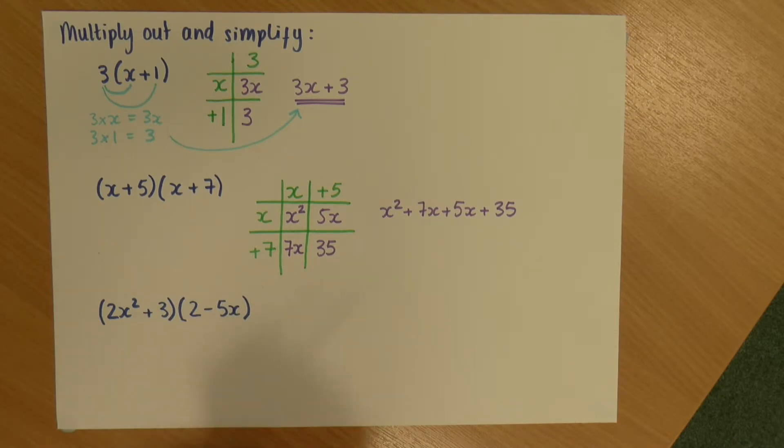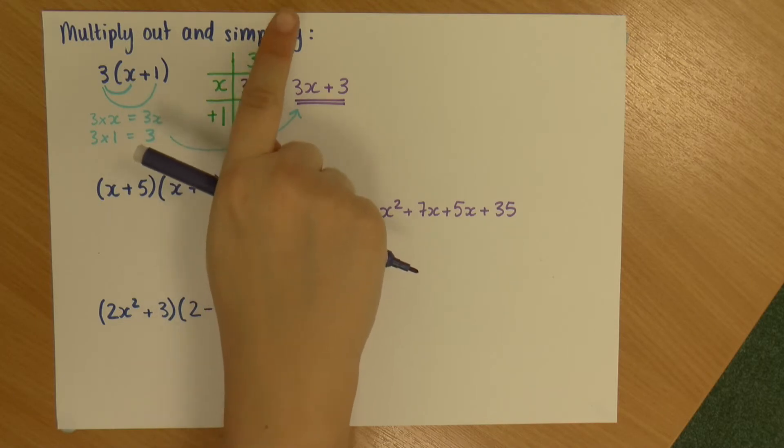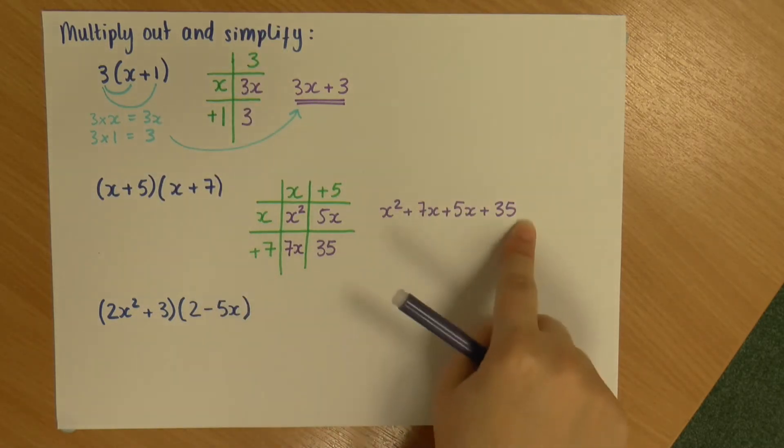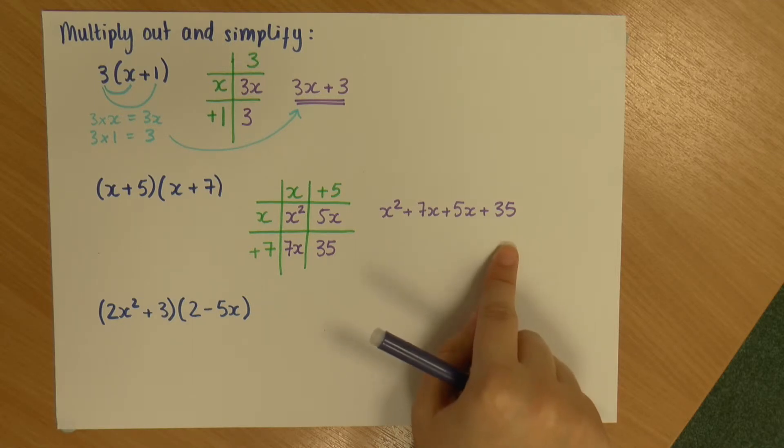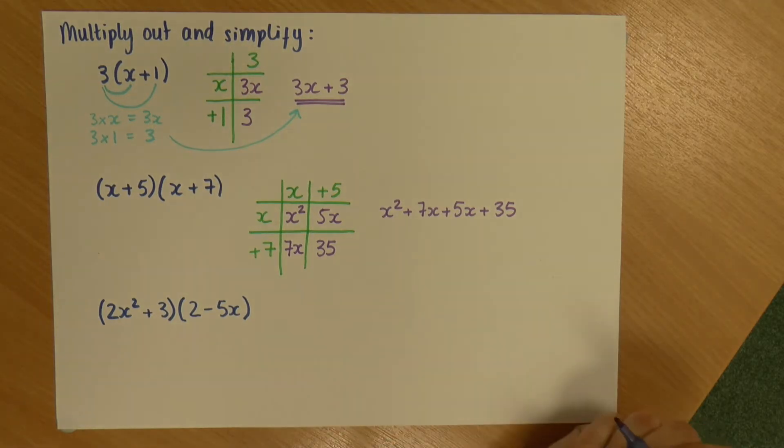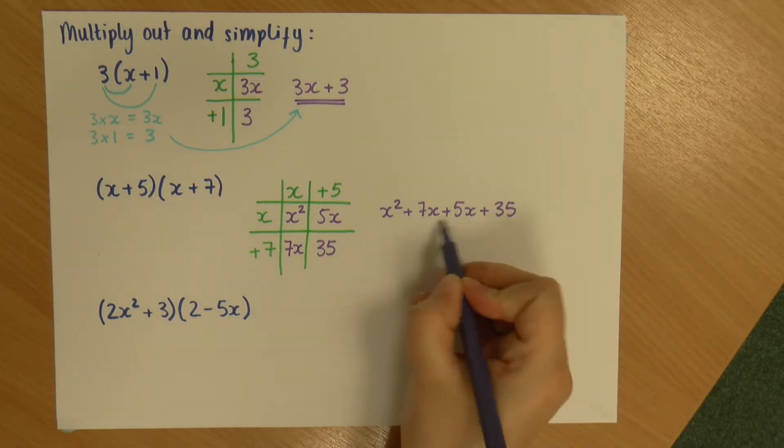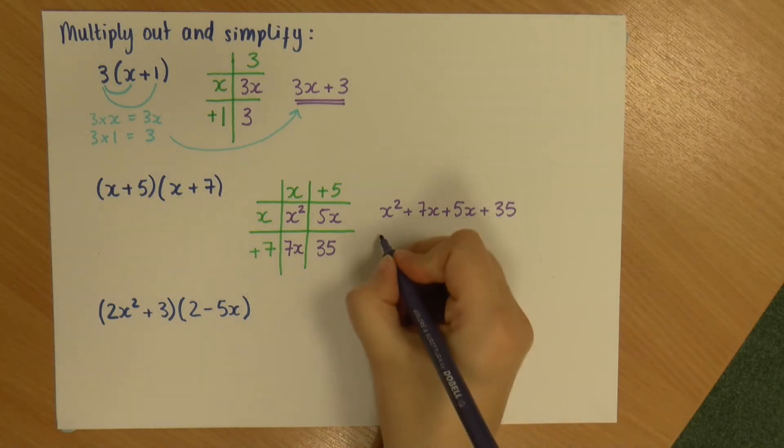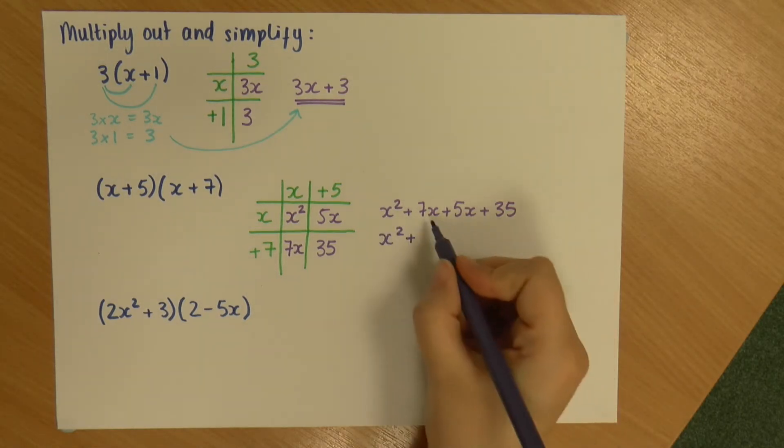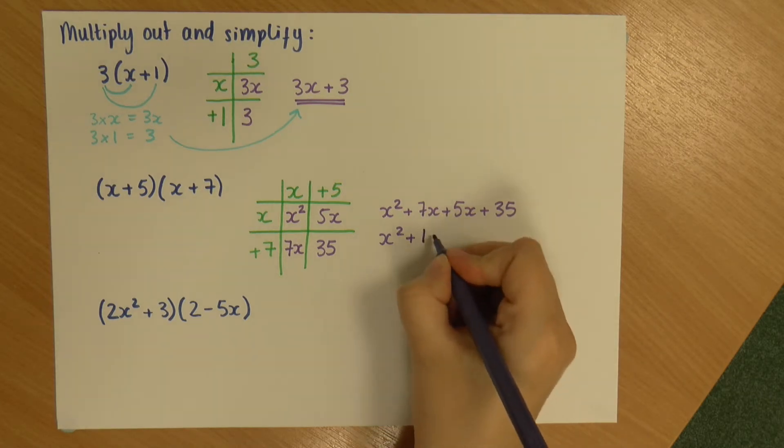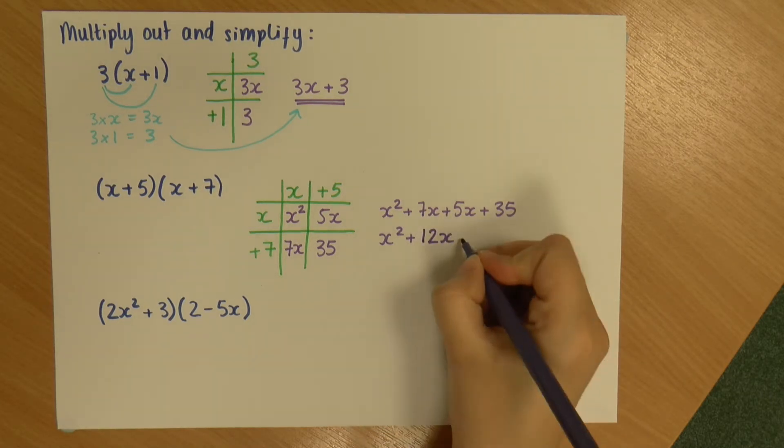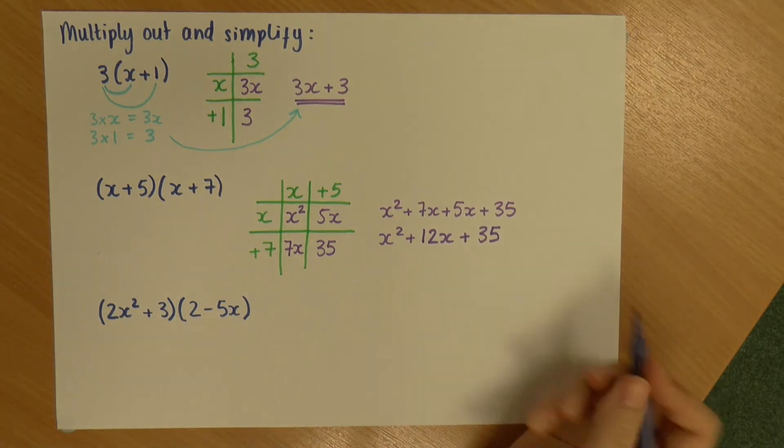And that is my multiplied out version. Now, this is where you need to pay attention to the question. Because this question says simplify. So, I can simplify this using my collecting like terms. So, I've done a previous video on collecting like terms. So, if you're not familiar, go have a look at that. But essentially, what it means is that these two terms that both have an x in and an x on its own, not an x squared, I can add those together. So, I'll end up with x squared plus 7 plus 5, which is 12x plus 35. And I can't simplify that anymore.